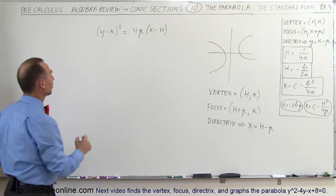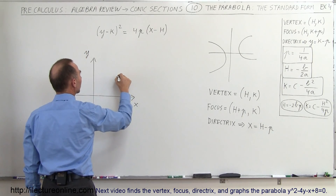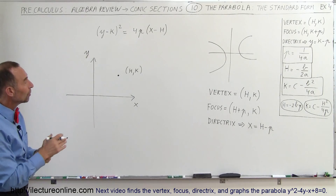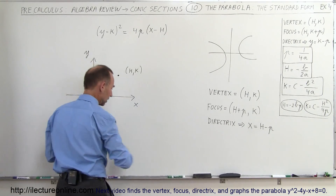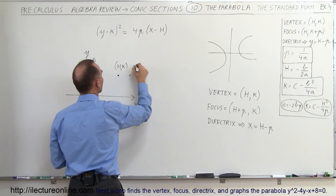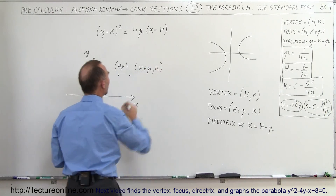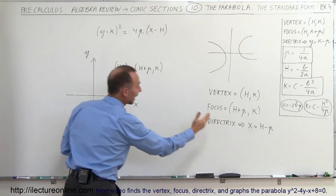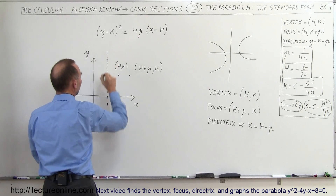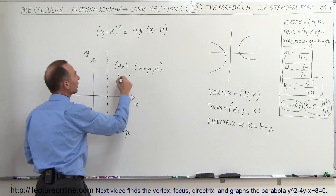In this particular case, we're going to have a parabola with a y-axis and x-axis. Let's say right here is the point h, k — that's where the vertex of the parabola is going to be. The focus is at h plus p. If p is a positive number, the focus will be over to the right, further along the x-axis, with the same y value k. The directrix is then x equals h minus p, which is a vertical line to the left.